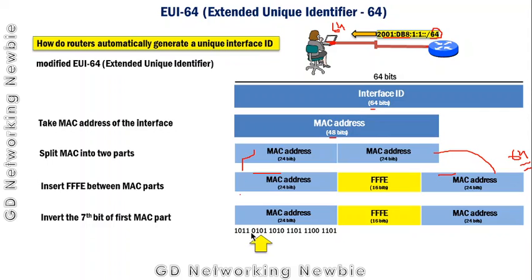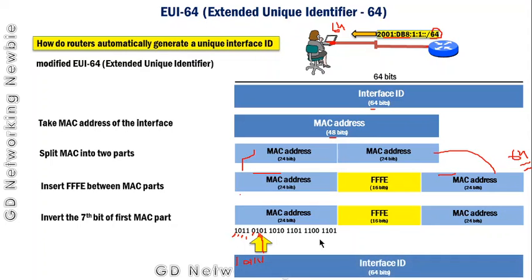We have 24 bits and we count from the left-hand side: first, second, third, fourth, fifth, sixth, and seventh. So the seventh bit is zero, and we have to invert it — that means it will be converted from zero to one — while all the remaining bits stay the same. After inverting the seventh bit of the first MAC address part, whatever we have left will be used as the interface ID of the IPv6 address.